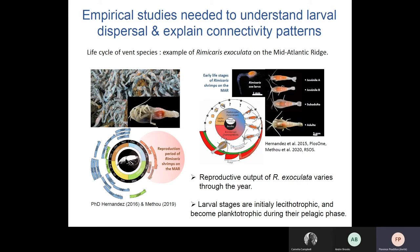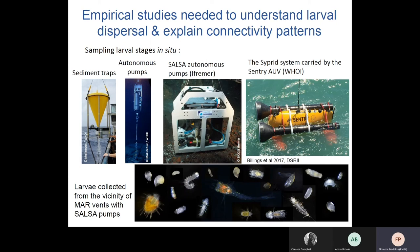Until recently we had no information about its reproduction — for example, we didn't know when and where females were spawning, which has important implications if we want to preserve source populations. We studied reproduction and early stages of the species and found that it probably reproduces seasonally, and that the larval stage has an initial lecithotrophic phase, which may affect its larval fate.